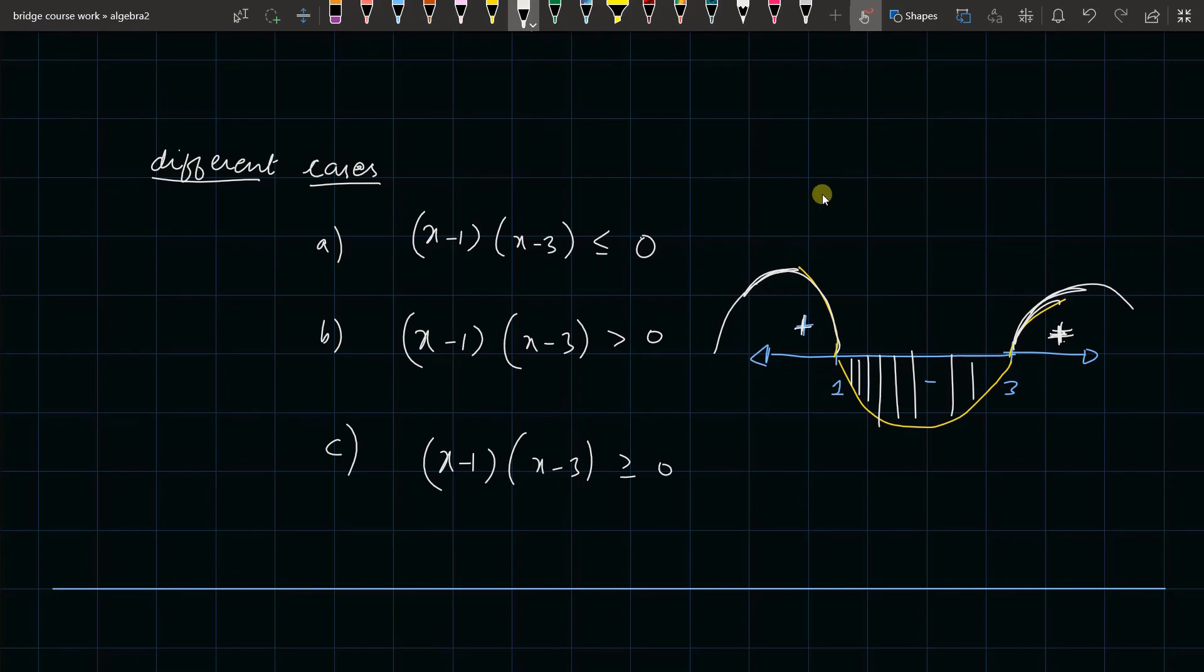So where is it less than equal to 0? Less than is at open interval 1 to 3. Less than equal to means the solution to this is wherever it is equal to 0—at 1 and 3 they are equal to 0 and that is taken—and between 1 and 3 it is definitely less than 0. Greater than, when I talk about greater than, you can clearly see -∞ to 1 it is greater than, and 3 to ∞ it is greater than.